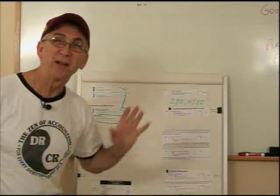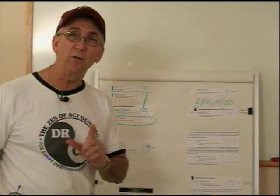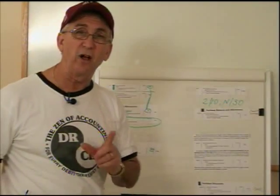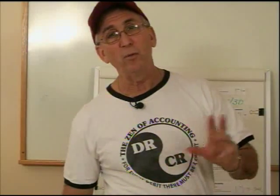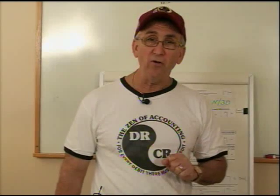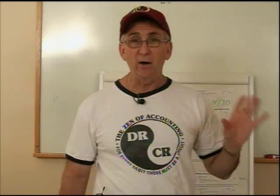What we're going to do is learn journal entries first of all for the sales side of it. Now, because it's perpetual, what we have to realize is that when we record our sales, not only do we record our sale, but we also will have to remove our inventory out of our inventory and into cost of goods sold.